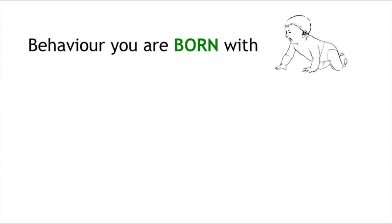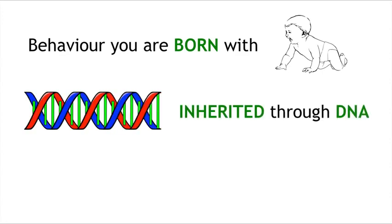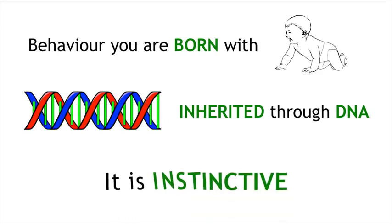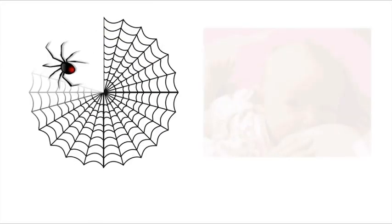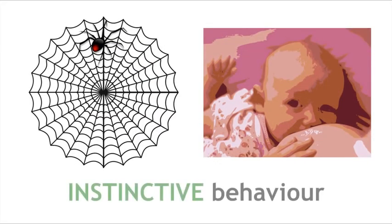Innate behaviour is behaviour that you are born with, behaviour which you inherit because it is in your DNA. It is instinctive behaviour. For example, a spider knows how to spin a web as soon as it is born or a baby can suckle because it is instinctive.